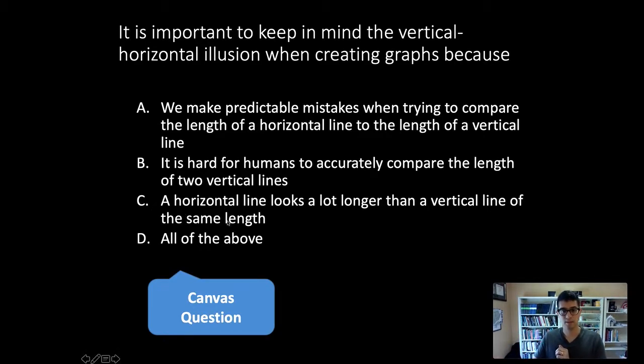It was not C because the vertical one looks longer, not the horizontal. It's not B because we could very easily see the difference in the heights among the Batman. The answer is A. We predictably make mistakes when we're trying to compare the horizontal and vertical line. We predictably think that the vertical one is longer than the horizontal one even when they're the same length. So the answer to that participation question is A.